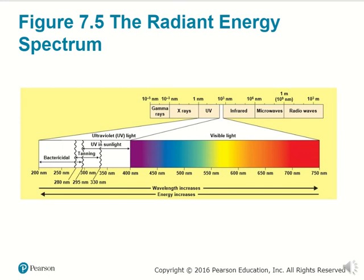The light spectrum shows that visible light is what we're able to interpret as color. As we go into decreasing wavelength or increasing energy, we eventually reach UV light and then high-energy radiation such as x-rays and gamma rays, which are very effective at destroying bacteria.